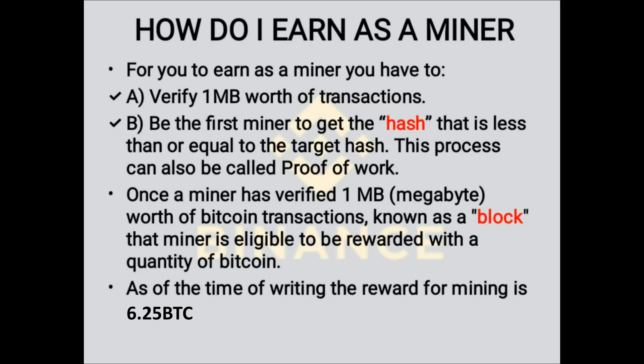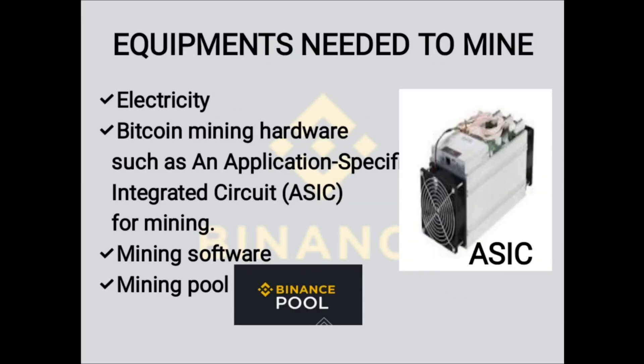For you to earn as a miner, you first have to verify one megabyte worth of transactions. Second, you have to be the first miner to get the hash that is less than or equal to the target hash. This process can also be called proof of work. Once a miner has verified one megabyte worth of Bitcoin transactions, known as a block, that miner is eligible to be rewarded with a quantity of Bitcoin.